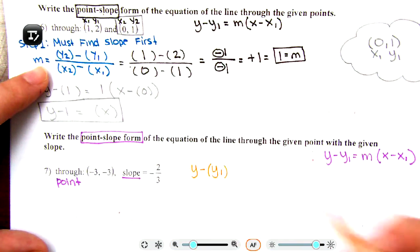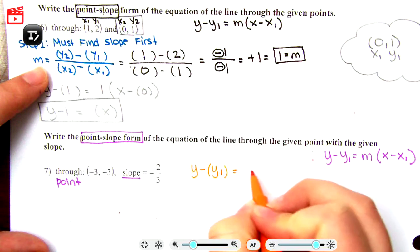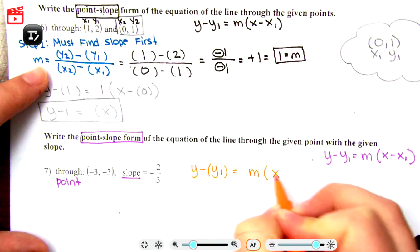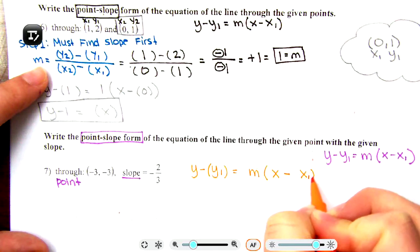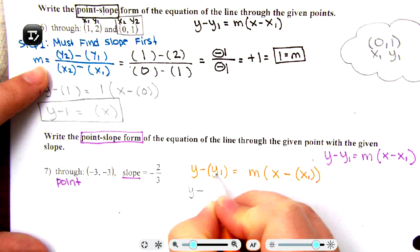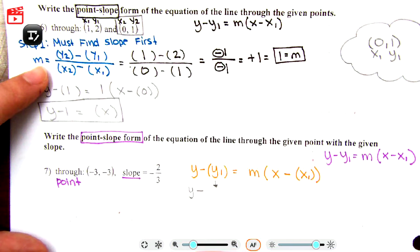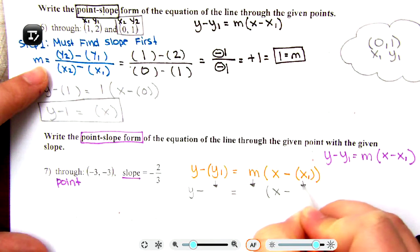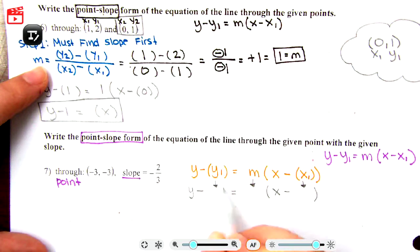I'm going to rewrite this here. We have y minus y1, I'm gonna put y1 in parentheses, equals m parentheses x minus x1. I'm gonna put x1 in parentheses. This is where we have our keep-keep-change. Keep-keep-change, you have your slope, keep-keep-change. I put arrows here just to show you where these numbers are gonna go.